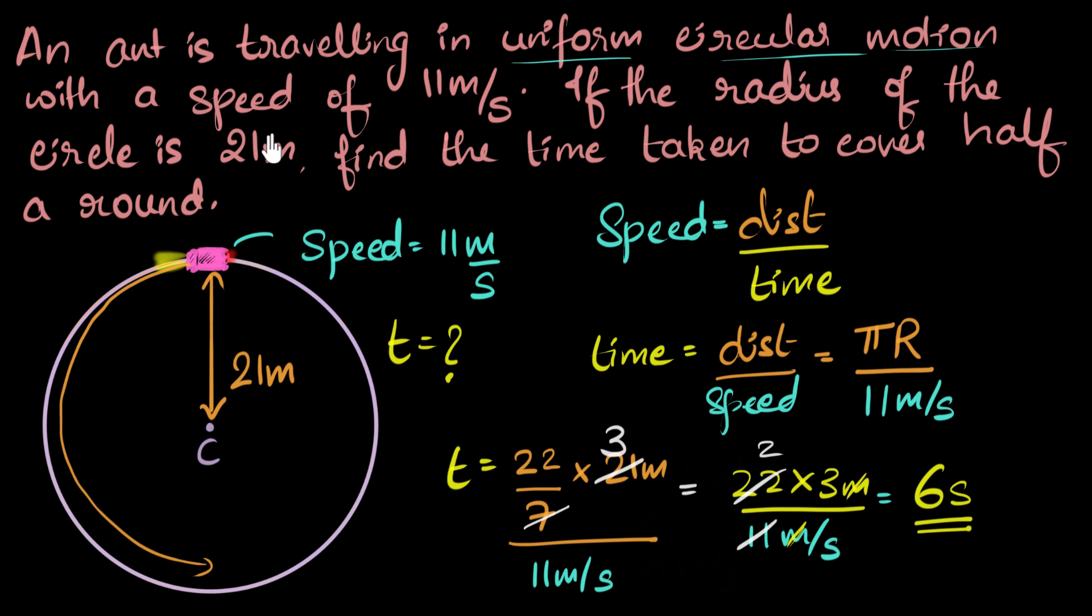So what we see is, whenever we're dealing with uniform circular motion, we can always use speed is distance by time, going back to the old formula. And the only thing is, when it comes to the distance, we just have to use a circumference formula. If it's a full round, it'll be two pi r. If it's a half a round, it'll just be pi r.